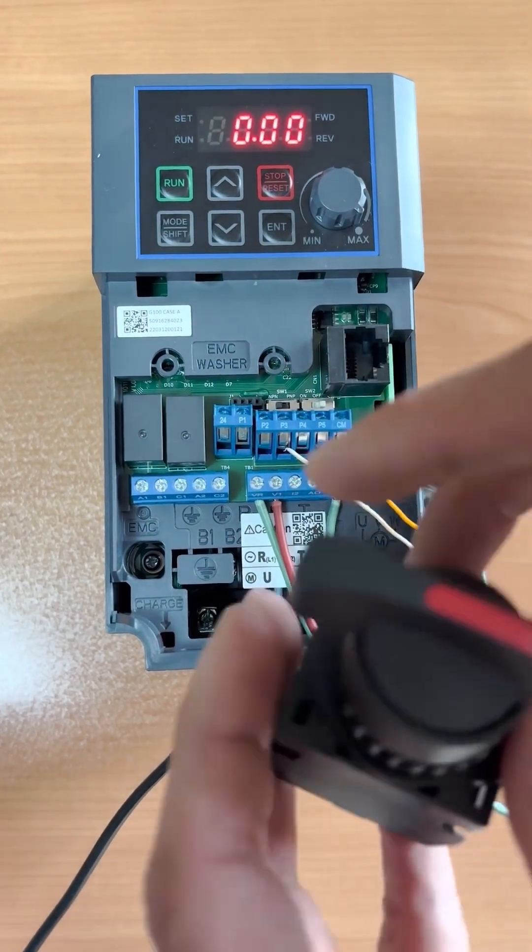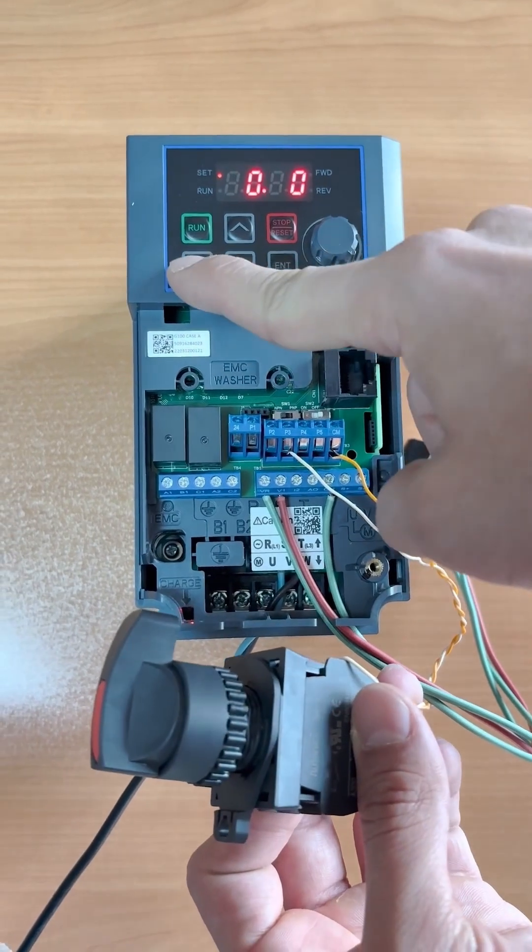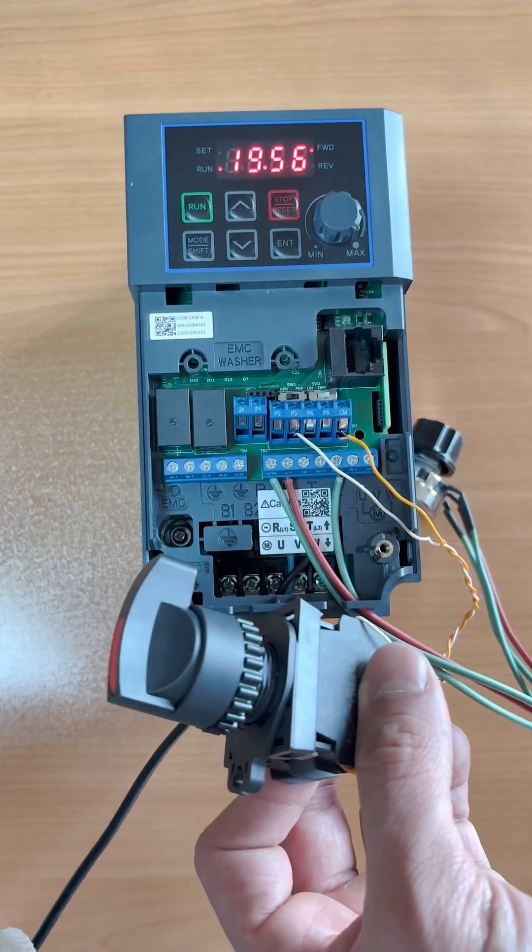Okay, now my digital input is the same as before. As you can see, it's deactivated, so the frequency must be set from the keypad. For example, I set a frequency of 30 Hertz and start the inverter.